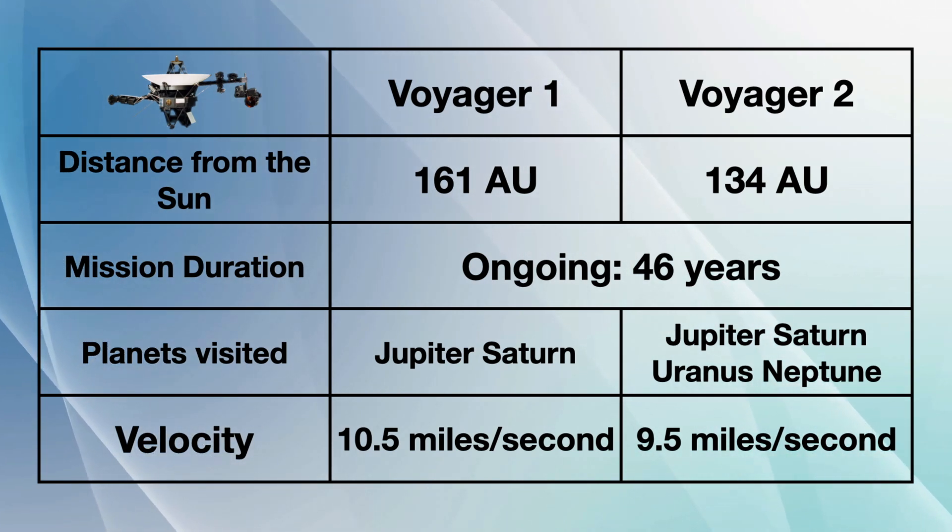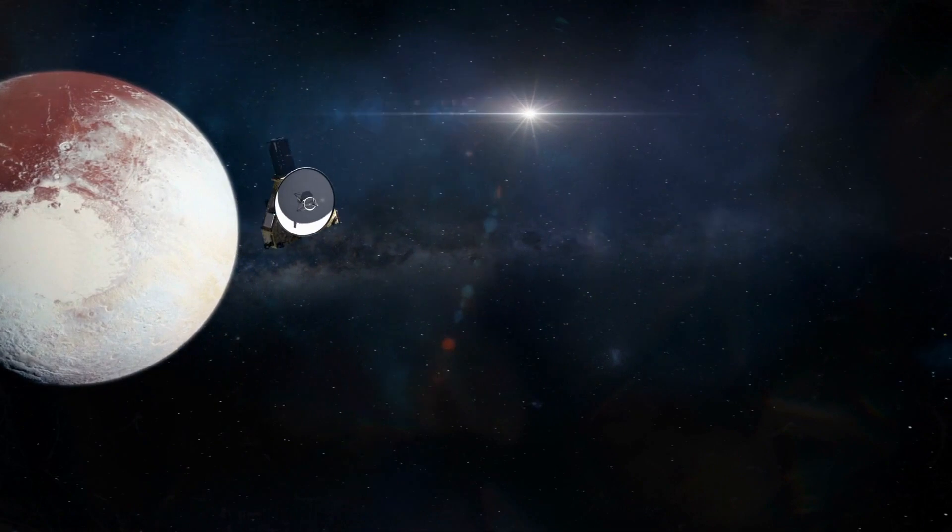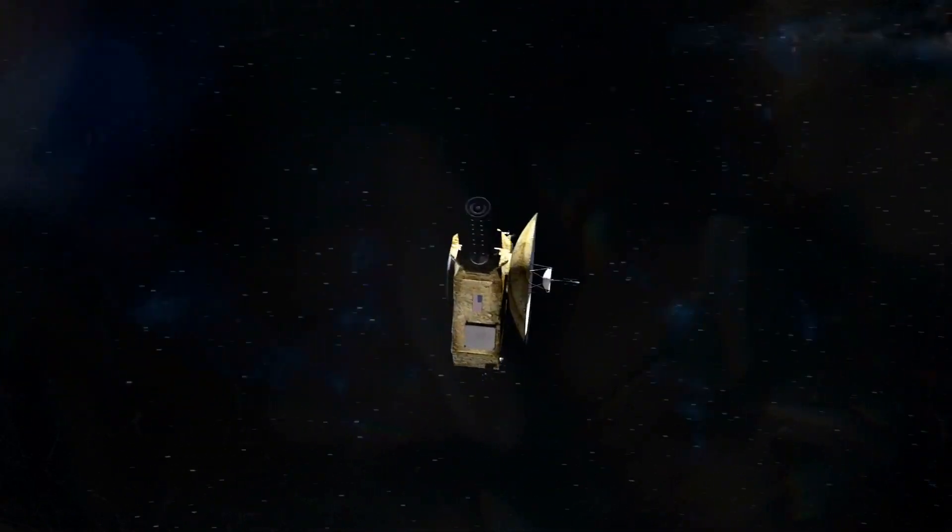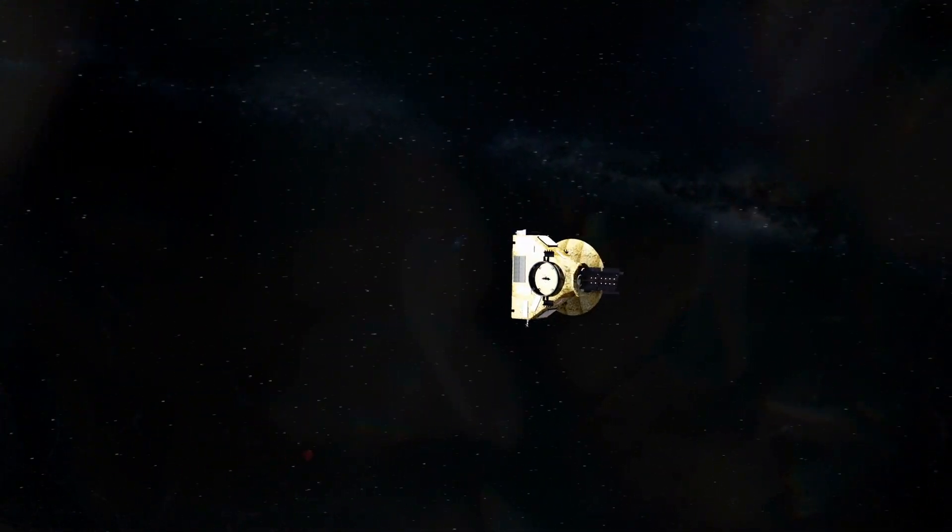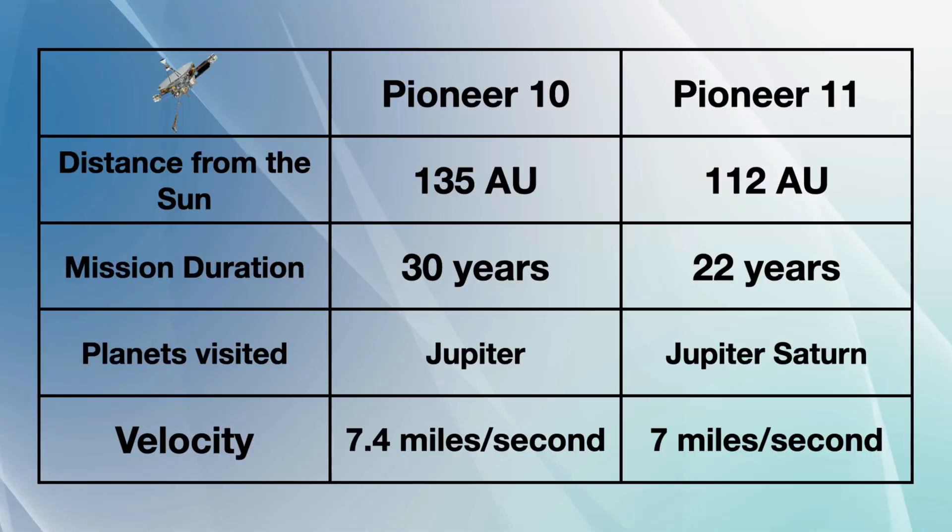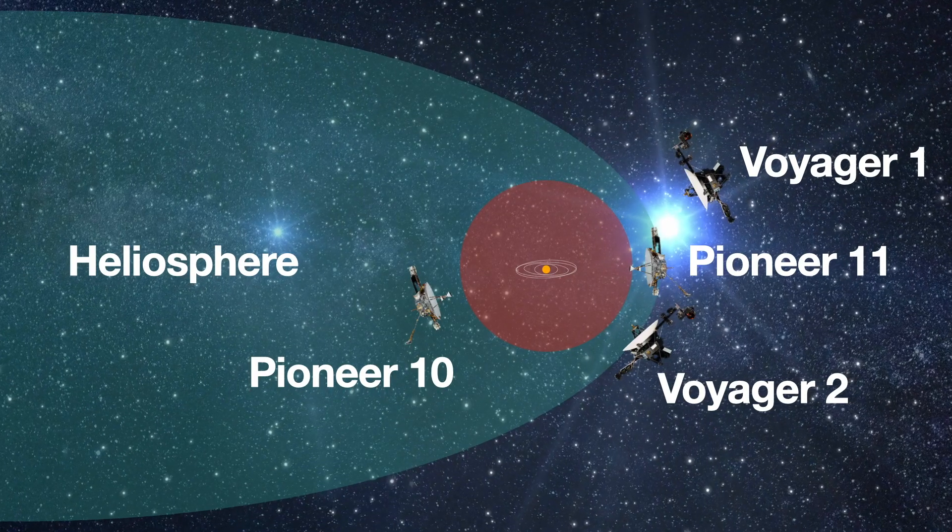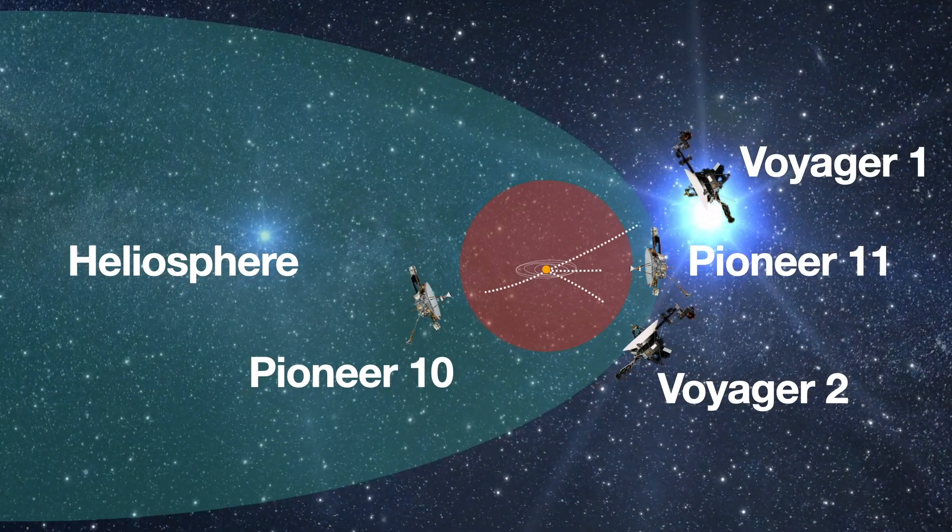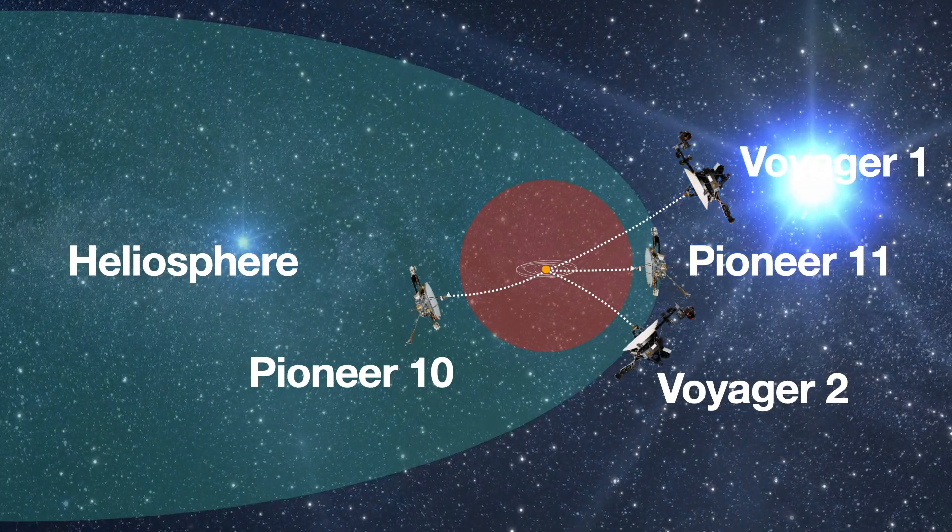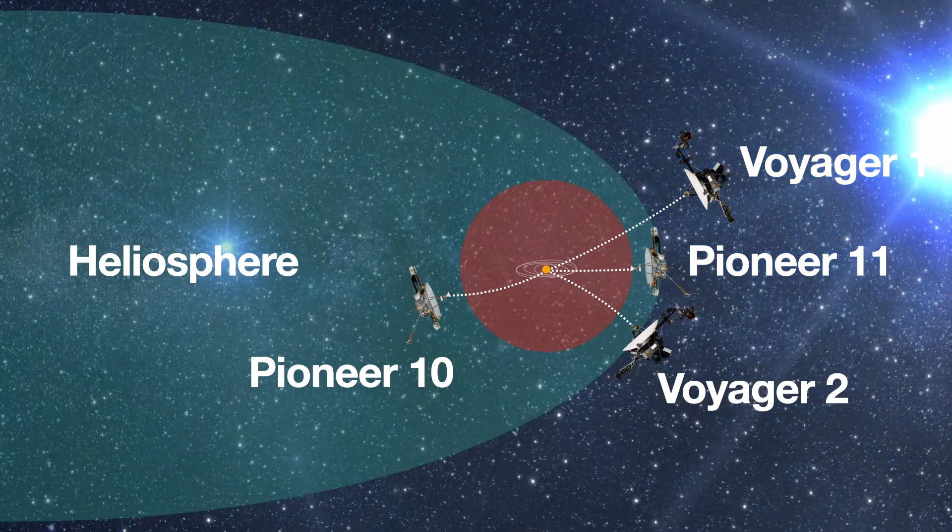Voyager 1 is 161 AU from the Sun and Voyager 2 is at 134 AU. New Horizons will join them in the future assuming it remains operational, but it is currently about 56 AU from the Sun. If the estimates of their locations are correct, Pioneer 10 is at 135 AU and Pioneer 11 is approaching heliopause at 112 AU from the Sun. Because of Pioneer 10's trajectory and the heliosphere's oval shape, it crossed termination shock but is likely still within the heliosphere.